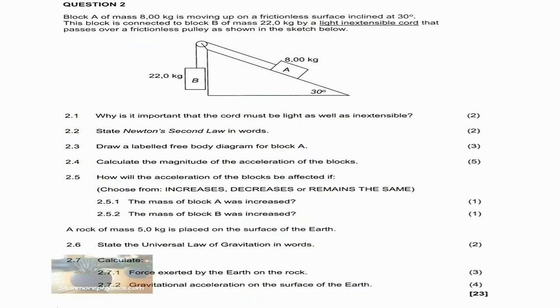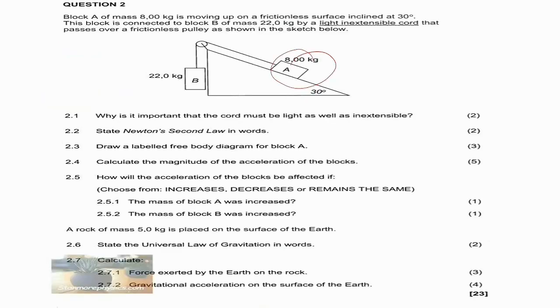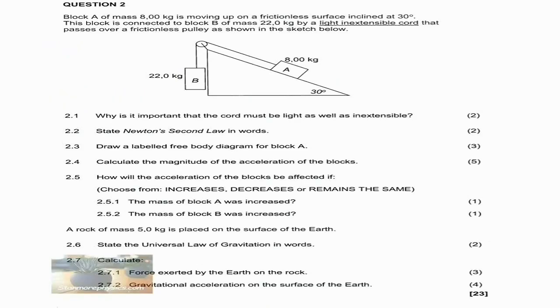Question 2.5 asks how acceleration is affected if masses change. For 2.5.1, if the mass of Block A is increased, the acceleration will decrease — it becomes harder for the system to accelerate downward as the tension force increases. For 2.5.2, if the mass of Block B is increased, the acceleration will increase — the larger fg helps pull the system down faster.